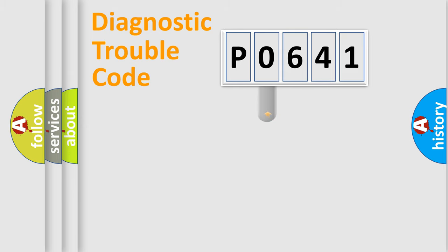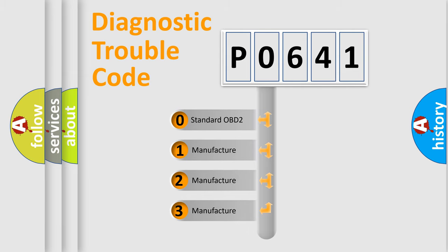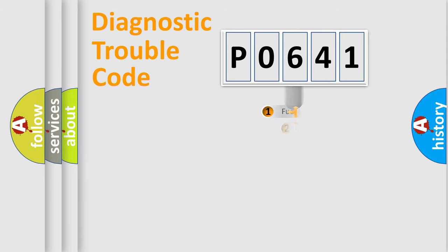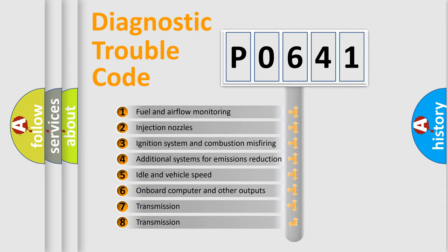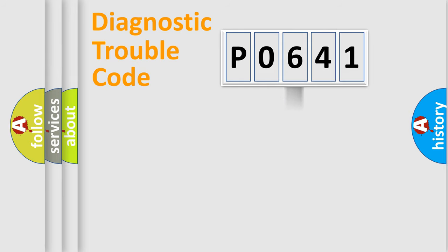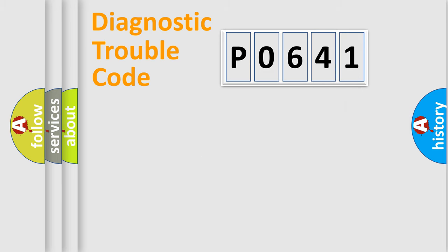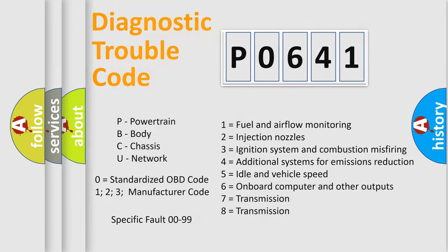This distribution is defined in the first character of the code. If the second character is expressed as zero, it is a standardized error. In the case of numbers 1, 2, or 3, it is a more specific expression of a car-specific error. The third character specifies a subset of errors. This division is valid only for the standardized DTC code, and only the last two characters define the specific fault of the group. Such a division is valid only if the second character code is expressed by the number zero.